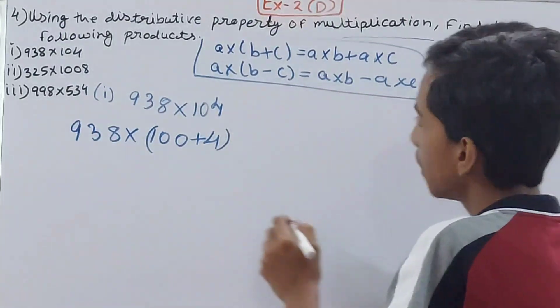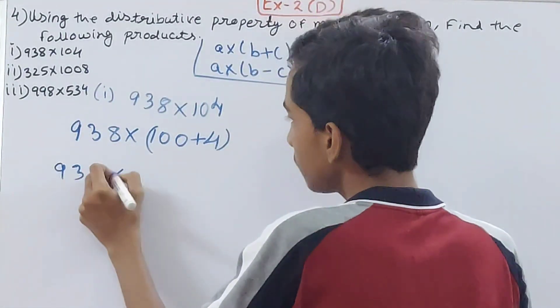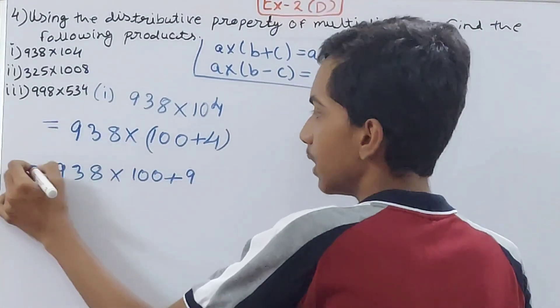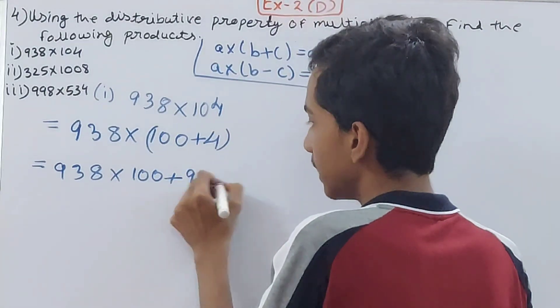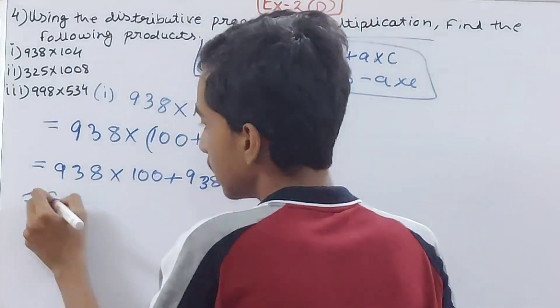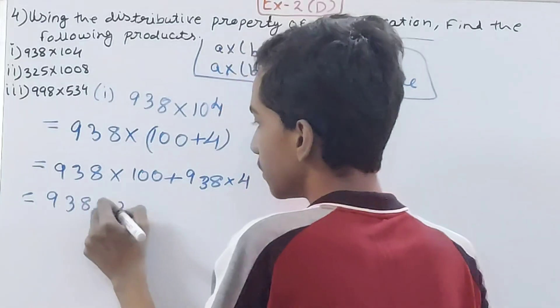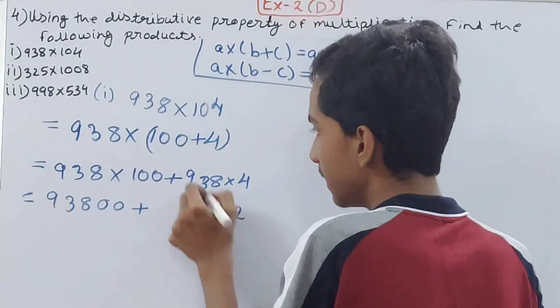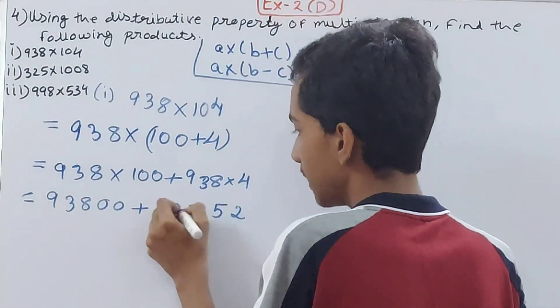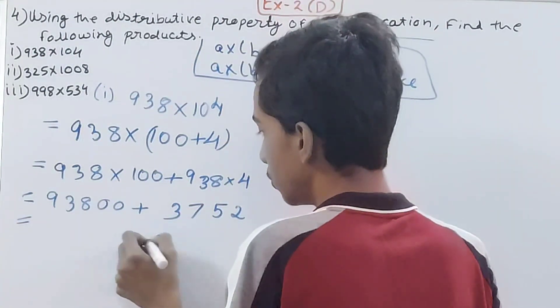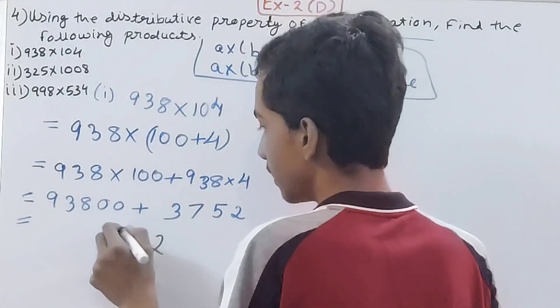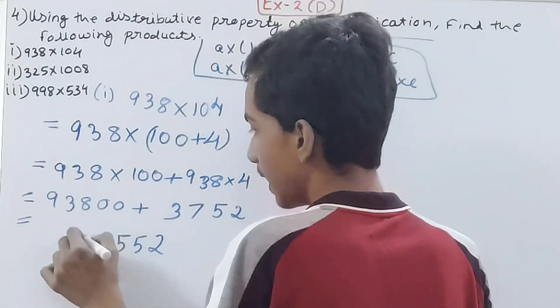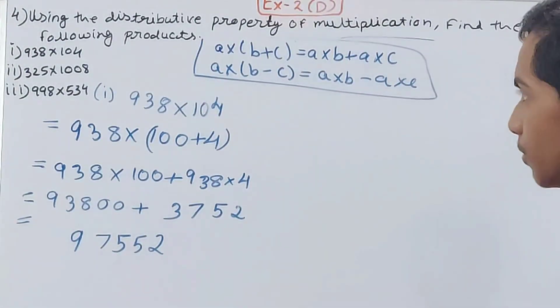Using the formula, 938 × 100 plus 938 × 4. This becomes 93,800 plus 3,752. Now add: 93,800 plus 3,752 equals 97,552.